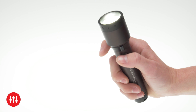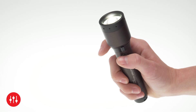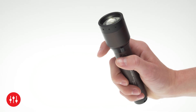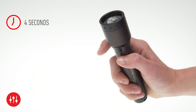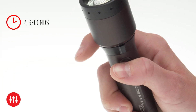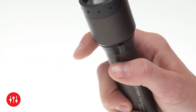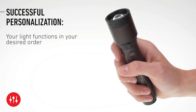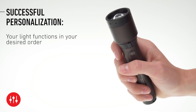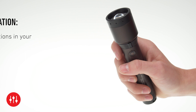When you are finished and do not want to add more light functions, hold the switch for 4 seconds. It will flash 3 times to confirm. The switch personalization is now complete. You have now overwritten the factory settings.